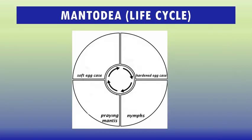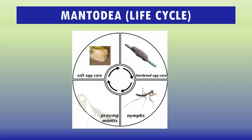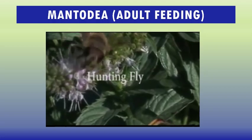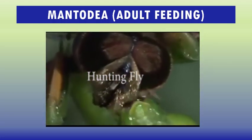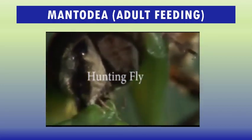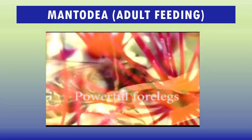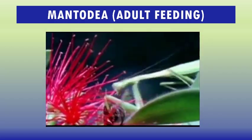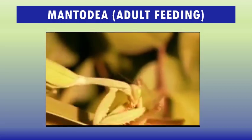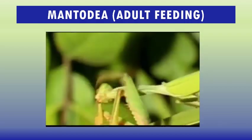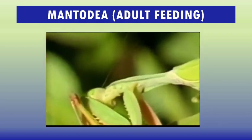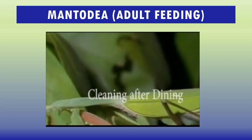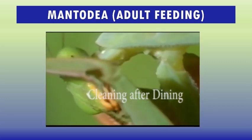The Mantodia life cycle goes from soft egg case to hardened egg case to nymph to adult praying mantis. Mantises are generalist predators of arthropods. The majority are ambush predators that only feed upon live prey within their reach — they either camouflage themselves and wait, or stalk prey with slow stealthy movement. Larger mantises sometimes eat smaller individuals of their own species, as well as small vertebrates such as lizards, frogs, small birds, and fish.